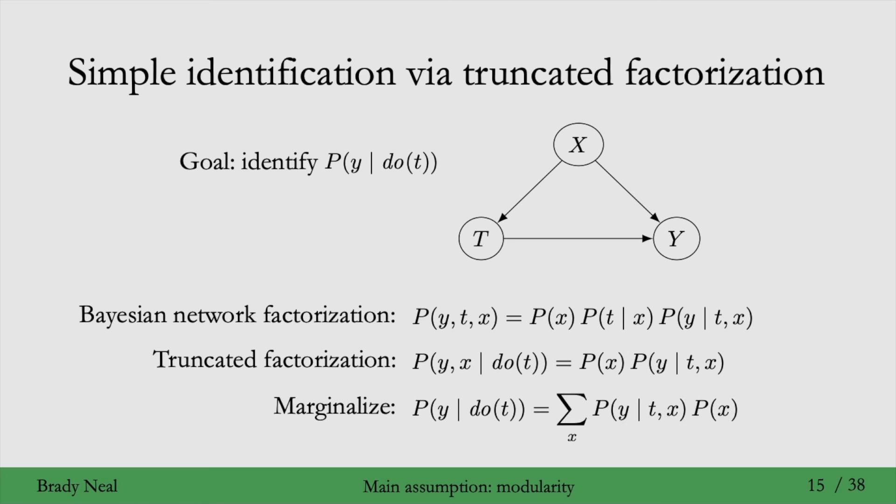And now all that's left is to marginalize out x. So we've identified p of y given do t as this statistical estimate on the bottom right here, using just this truncated factorization and the causal graph. And this only took us three steps.